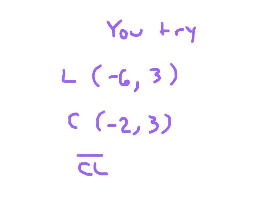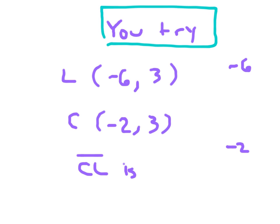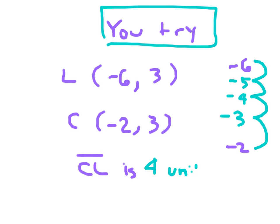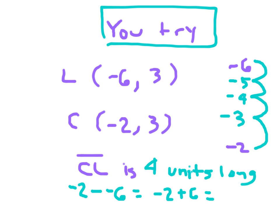How long is line segment CL? Think about going from negative 6 to negative 2 and counting from there. Counting up: -5, -4, -3, -2. That's 1, 2, 3, and 4 units. So line segment CL is 4 units long. Writing out the number sentence: negative 2 minus negative 6 equals negative 2 plus 6, which equals 4.